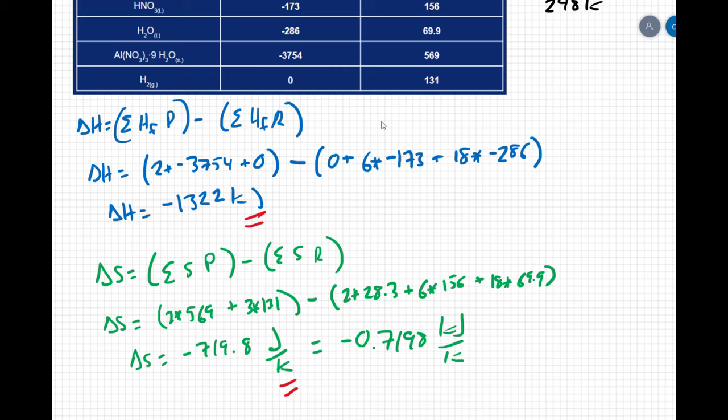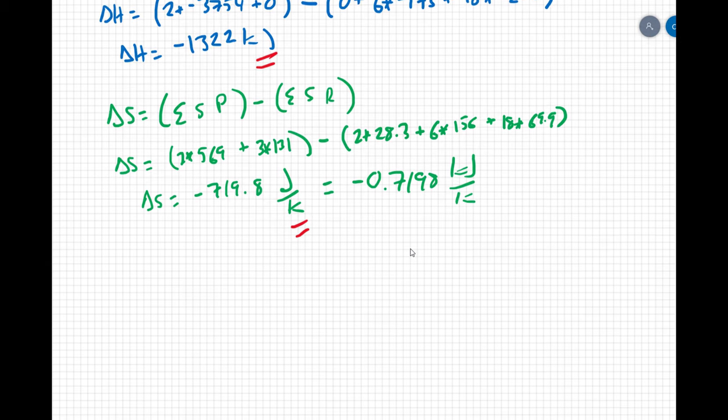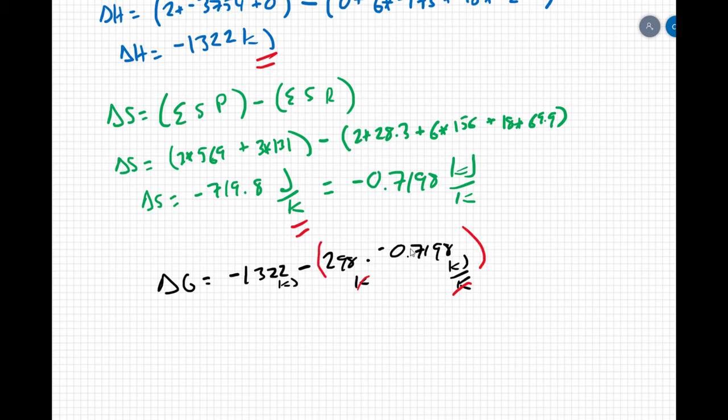And now I can put that all together to find my delta G value. I can say that delta G is going to equal my delta H which is negative 1322 minus T which is 298 times negative 0.7198. And that is kilojoules here, that is kelvin here, and then that's kilojoules per kelvin here. So that my kelvin cancel out and I'm going to be subtracting kelvin times kilojoules and we just have to make sure that I'm multiplying these together.